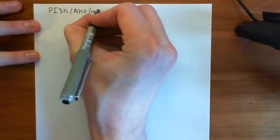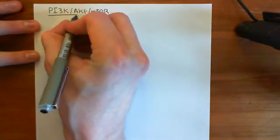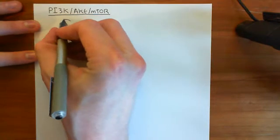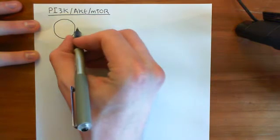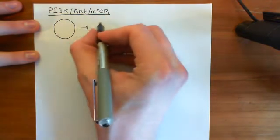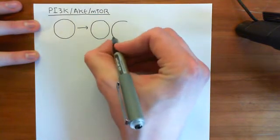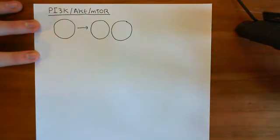The RAS pathway is going to activate cells to divide. The PI3 kinase AKT mTOR pathway is going to facilitate this, because if you think about it, what do we need in order for a cell to divide? In order for our cell to go from being one cell to being two cells, our cell firstly needs to grow. And in order to grow, you need to increase the number of proteins you have, and you also need to increase the number of intracellular organelles you have.